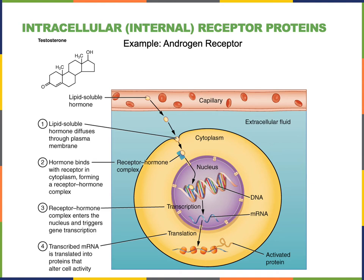An example of a lipid-soluble hormone is testosterone or dihydrotestosterone. Testosterone binds to the androgen receptor, which is an intracellular receptor, and will then stimulate the transcription of genes that will have masculinizing effects in the body — for example, stimulating the growth of skeletal muscle to increase muscle mass.